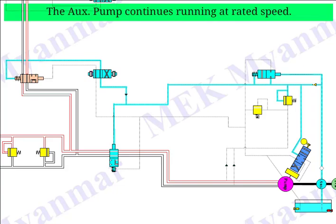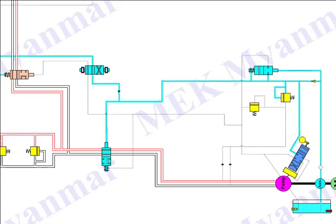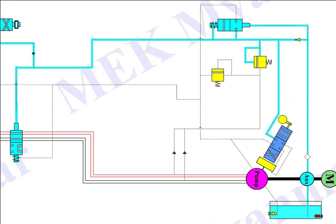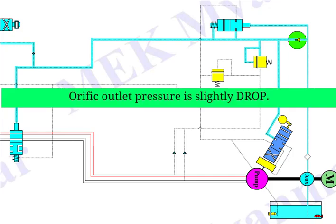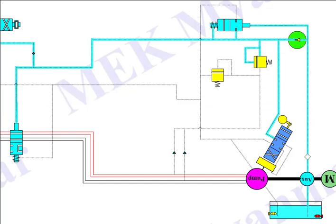The auxiliary pump continues running at rated speed. Because of the orifice, pressure differential is created. At the outlet of the orifice, pressure is slightly dropped. So, two different pressures are flowing through the pilot oil line: pump pressure and orifice outlet pressure.